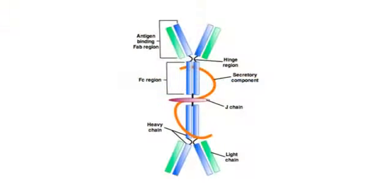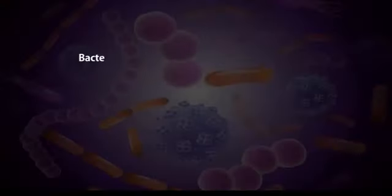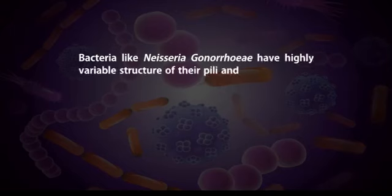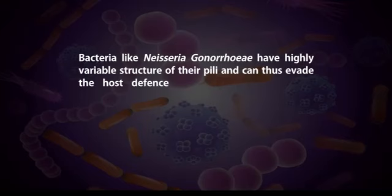However, some bacteria like Haemophilus influenzae and Neisseria gonorrhoeae secrete proteases that cleave secretory IgA at the hinge region, rendering them unable to agglutinate, and can thus evade the host defense. Bacteria like Neisseria gonorrhoeae have highly variable structures of their pili and can evade the host defense by changing their surface antigens.